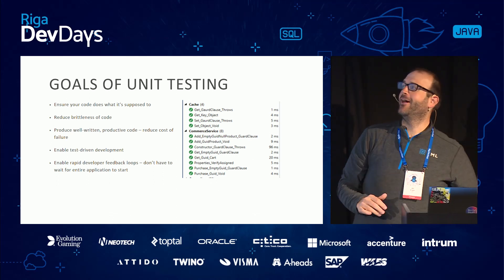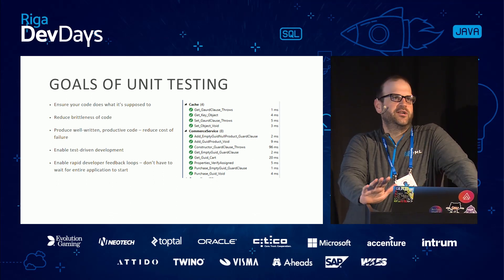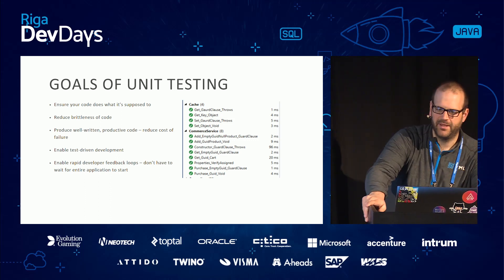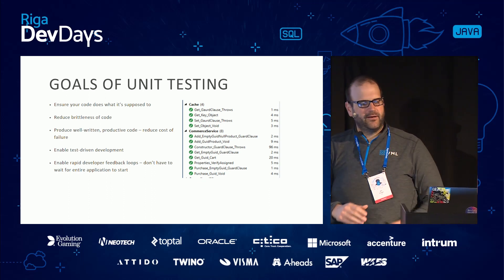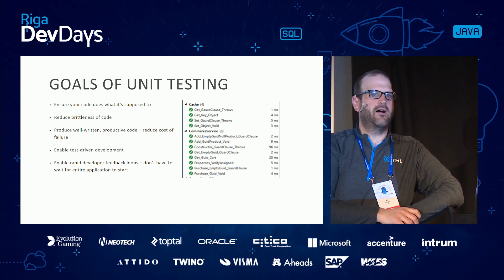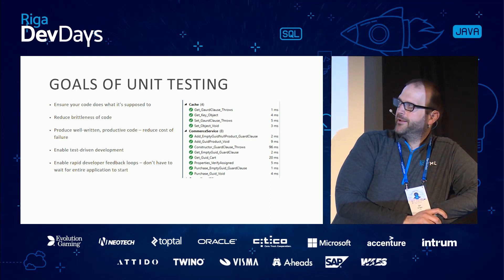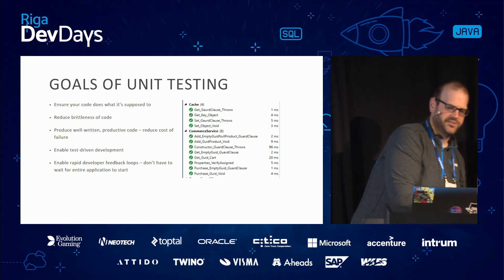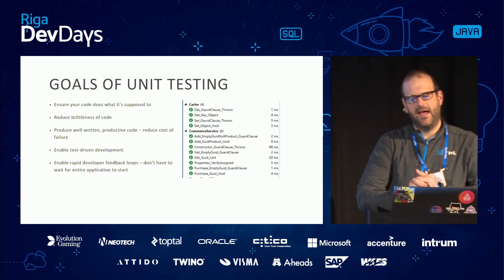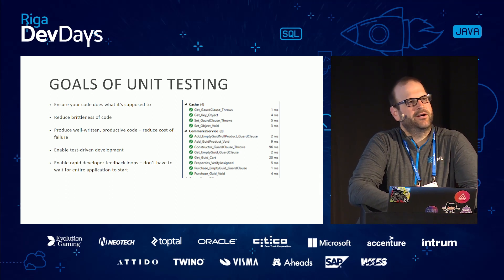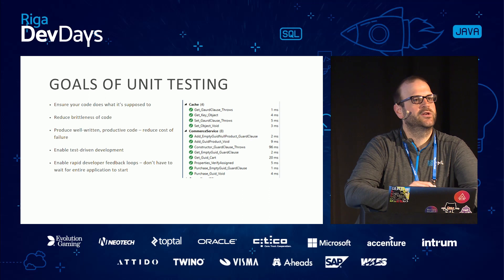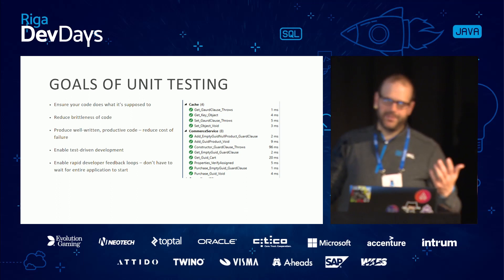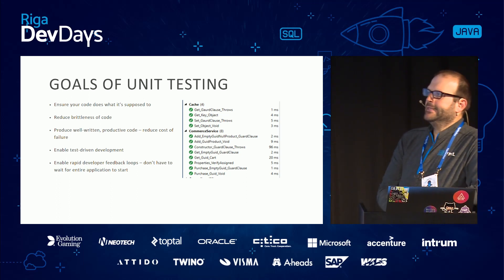First, we want to make sure the code does what it's supposed to do. We want to reduce the brittleness of the code — one of the big things that happens in projects is somebody changes something and now everything broke in production. Unit tests help prevent that. We also want to produce well-written productive code. As people learn to write tests, almost inevitably they write better code — they learn more about how the code is structured, how it flows, how it reads.